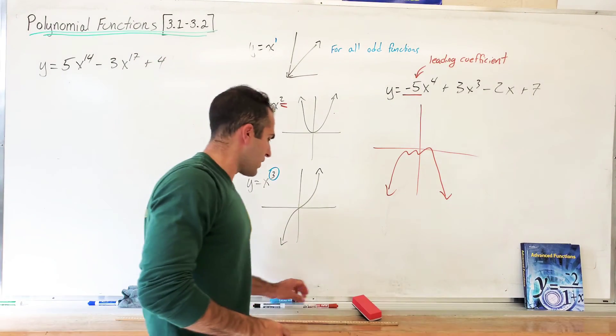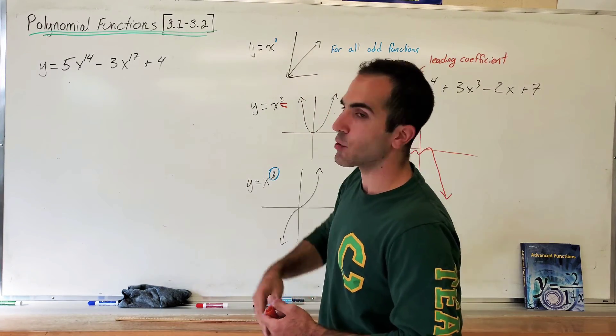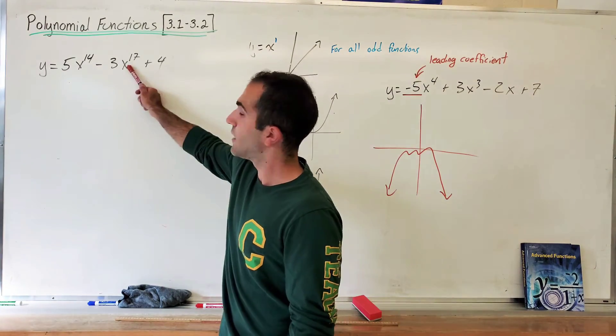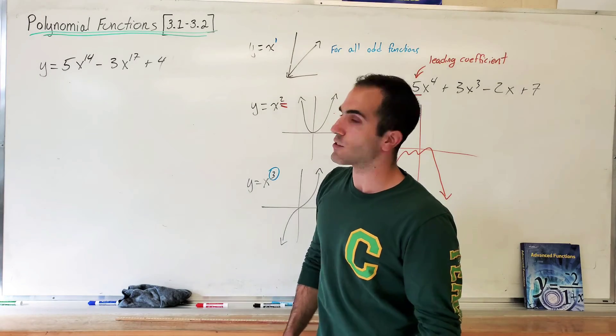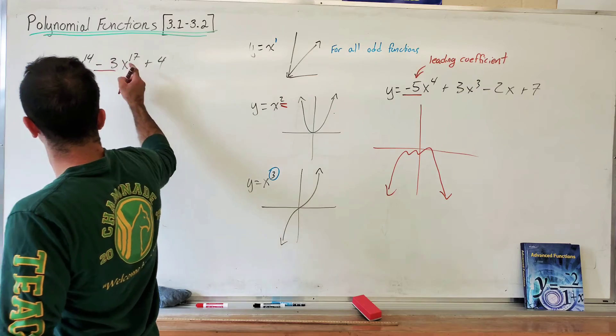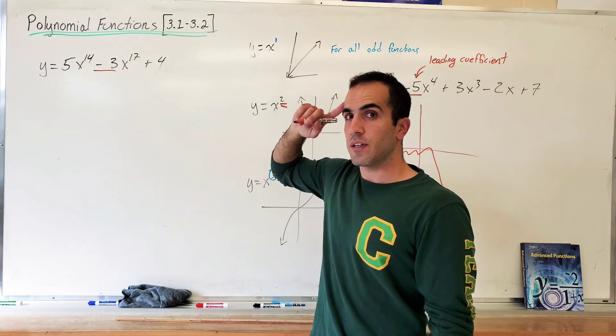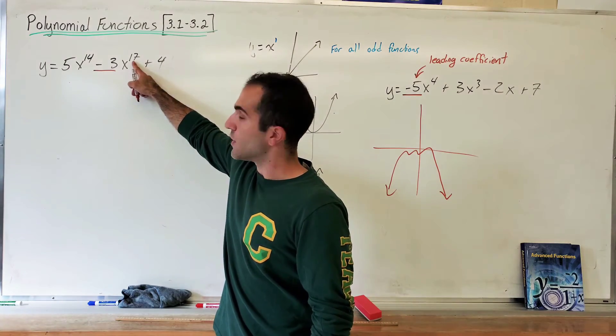Look at that. What's the leading coefficient? Some guys right now are thinking of the 5x to the 14. That is false. x to the 17 is a leading coefficient. Sorry, the leading coefficient is actually negative 3, not 3. Okay? So this is my leading coefficient because this is my highest power. Negative 3. The exponent is odd.